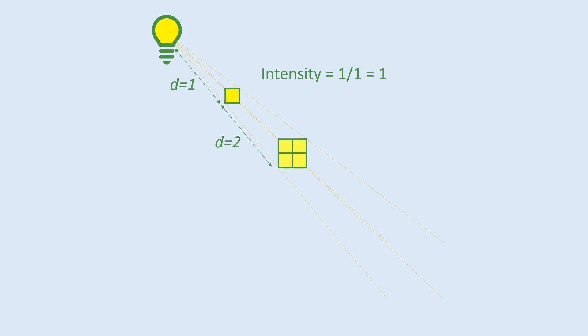So therefore, the intensity of light falling upon each square would be less. We can work out this intensity again using the same equation. We've got the same unit for our amount of light of one, but this time it's shared between four squares.